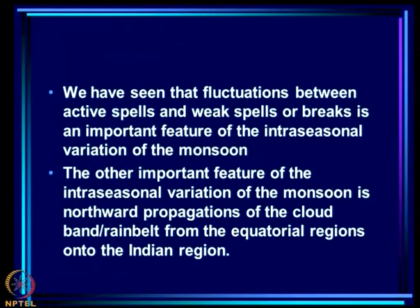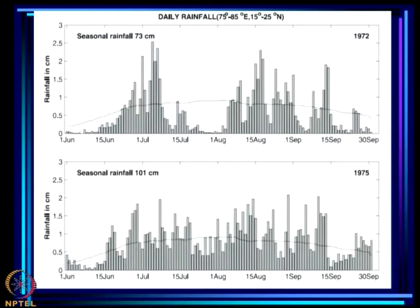The fluctuations between active spells and weak spells or breaks is an important feature of intra-seasonal variation of the monsoon. The other important feature is northward propagations of the cloud band or rain belt from the equatorial region onto the Indian region.